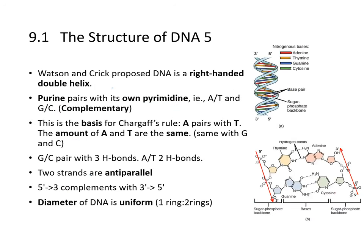Watson and Crick proposed that DNA is a right-handed double helix. A purine pairs with its corresponding pyrimidine: A (purine) pairs with T (thymine, pyrimidine), and G pairs with C. These are complementary pairs — the basis of Chargaff's rule. The amounts of A and T are equal, and the same holds for G and C.